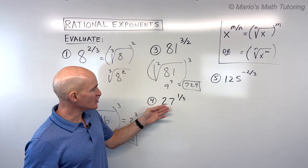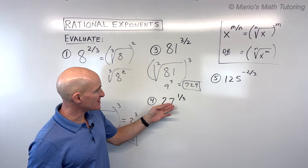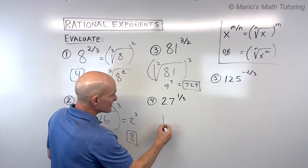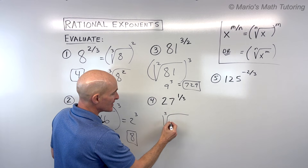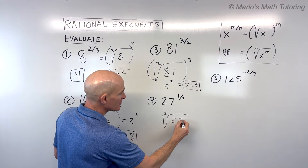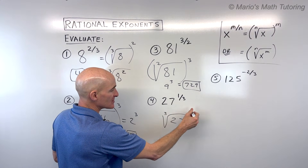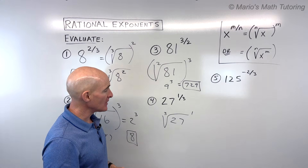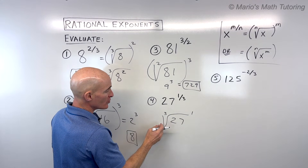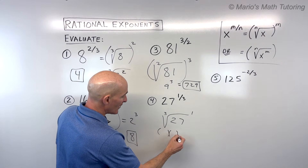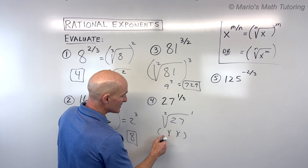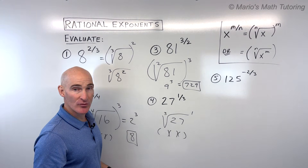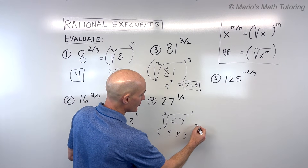For number 4, we've got 27 to the one-third power. The denominator is the index or root, so this is saying what's the cube root of 27. Then we raise it to the first power — of course anything to the first power is itself. So this is really just saying what's the cube root of 27. Three times three times three is 27, so the answer is 3.